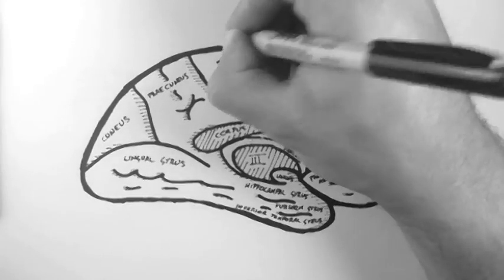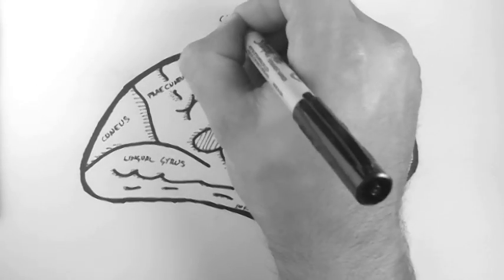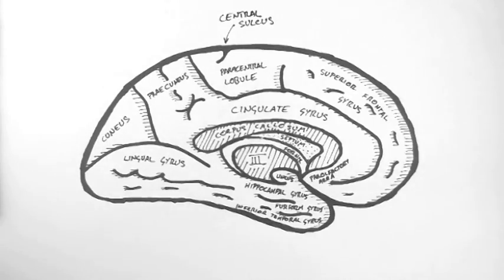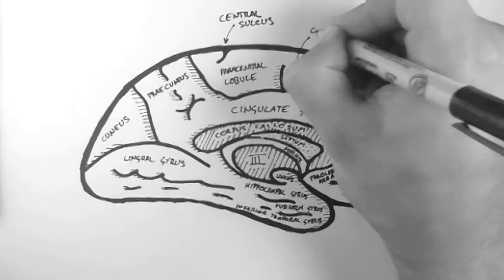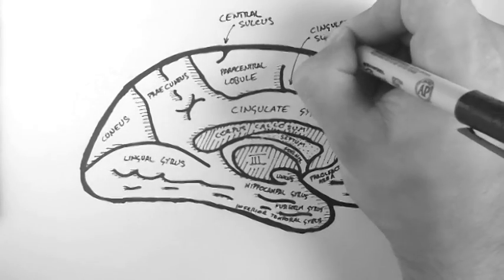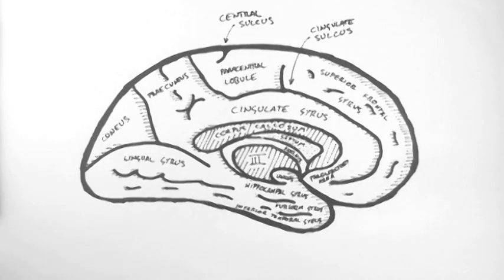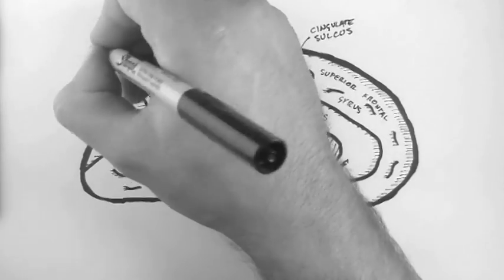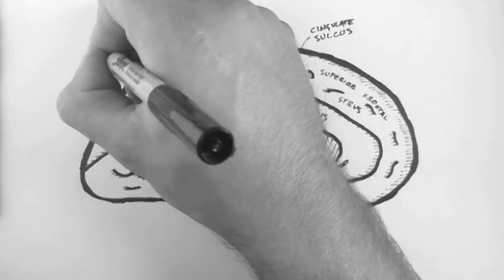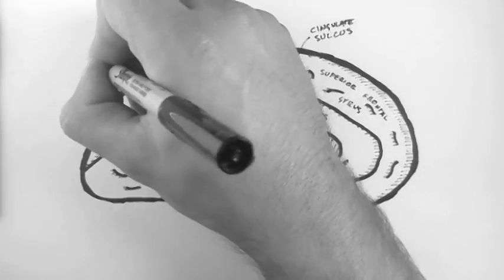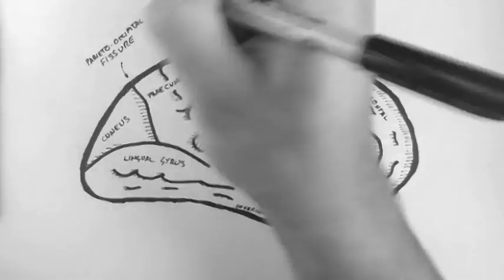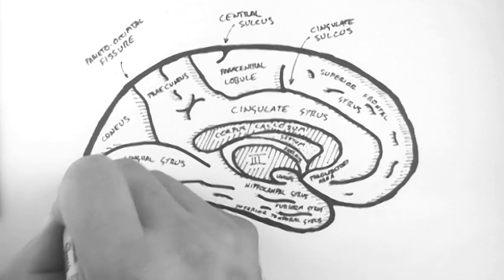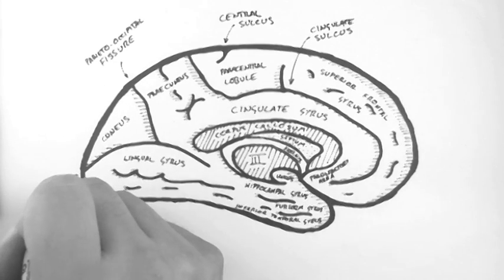Now I said this was an important feature. This is the central sulcus. Here we have the cingulate sulcus. Here is the parieto-occipital fissure. And we saw that on the lateral aspect of the brain. Here we have the calcarine fissure.